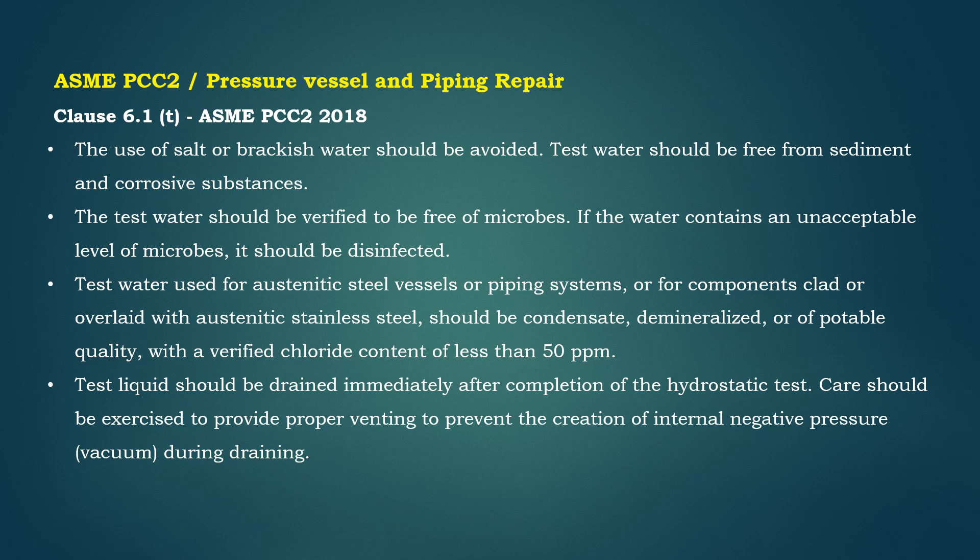Test water used for austenitic steel vessels or piping systems, or for components clad or overlaid with austenitic stainless steel, should be condensate, demineralized, or of potable quality with a verified chloride content of less than 50 ppm. Test liquid should be drained immediately after completion of the hydrostatic test. Care should be exercised to provide proper venting to prevent the creation of internal negative pressure or vacuum during draining.